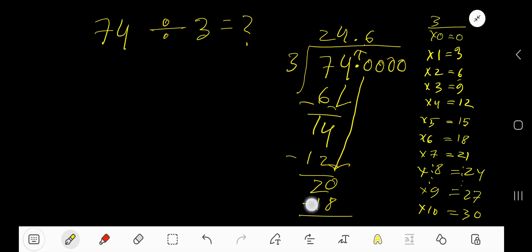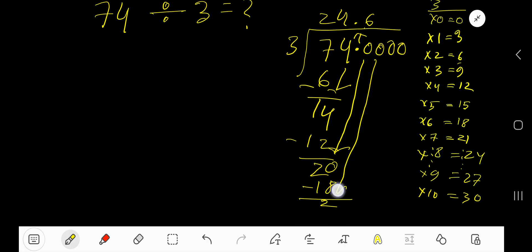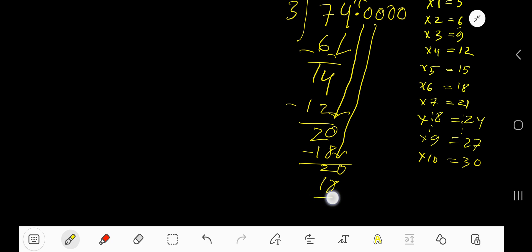Subtract 2. Bring down another zero. 3 goes into 20, 6 times. 6 times 3 is 18. Subtract 2, bring down another zero.